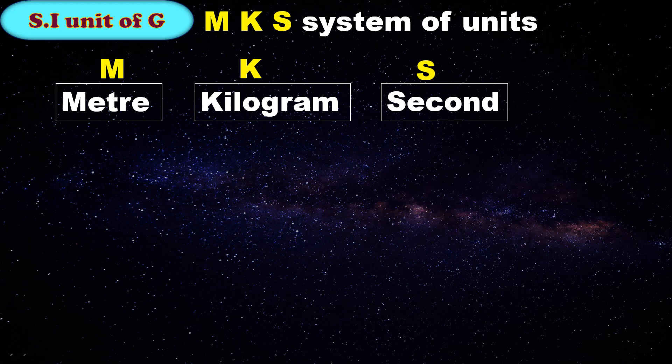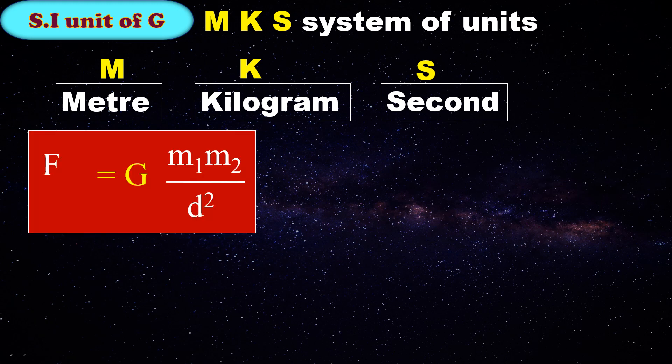Here we can see the mathematical formula of universal law of gravitation: F = G·M1·M2 by D². From this, we will calculate the value of G.